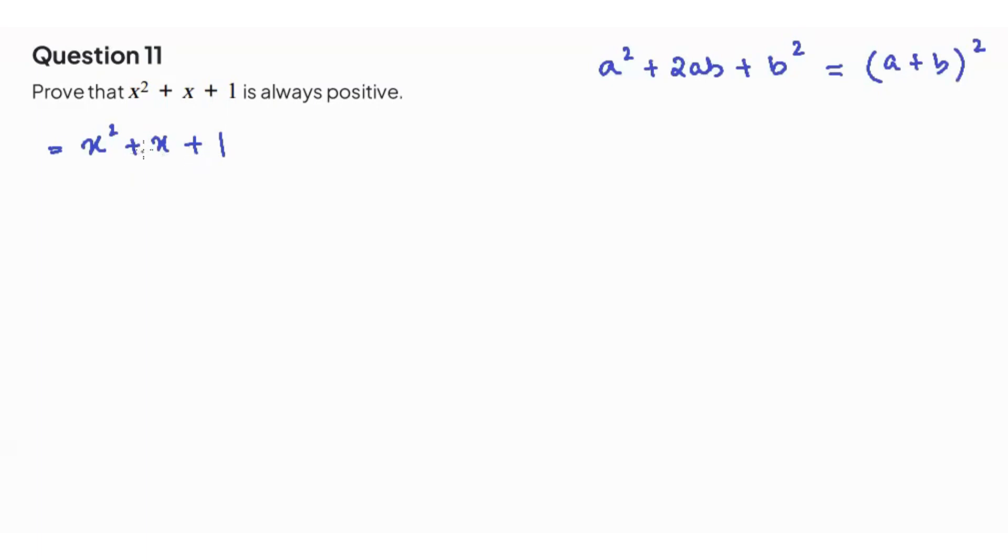So looking at our equation, we have our x squared term which is corresponding to a square. For our 2ab we will do 2 times x times 1 over 2. Why 1 over 2?